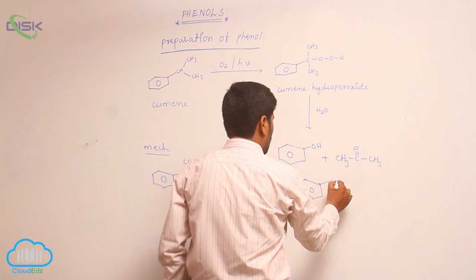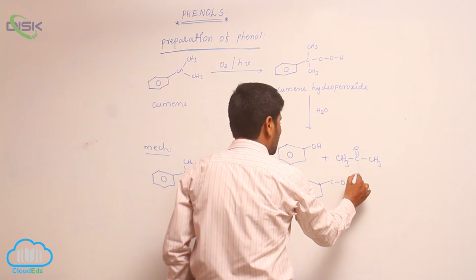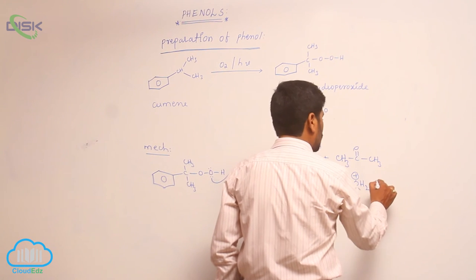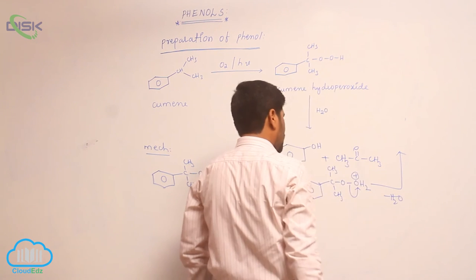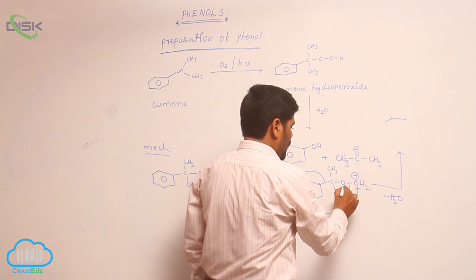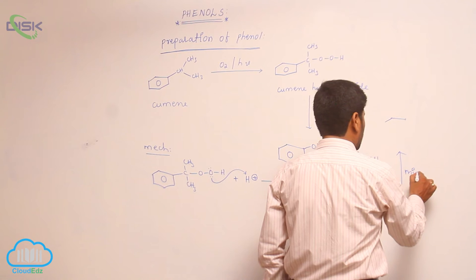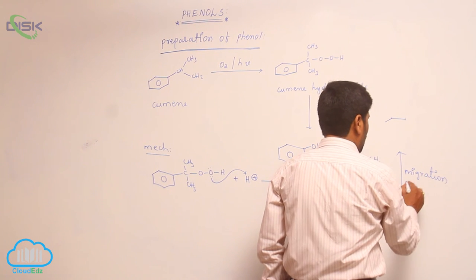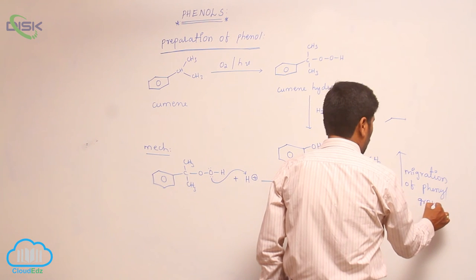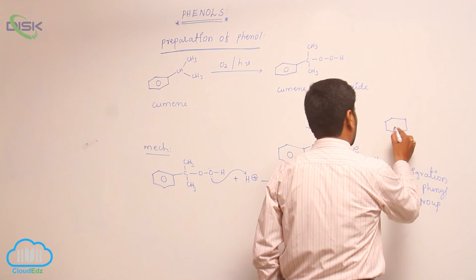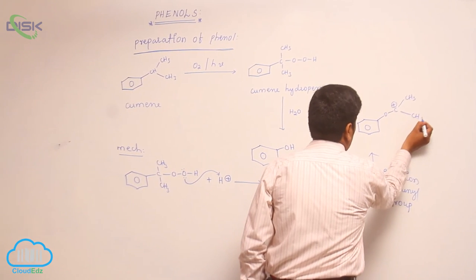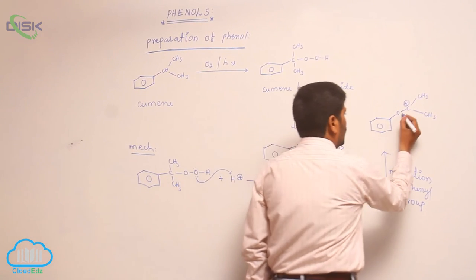Here is oxygen, and H₂ carries a positive charge, with methyl groups on either side. Loss of water molecule takes place, and immediately the phenyl group re-arranges — migration of phenyl group occurs. Then oxygen carries a positive charge, with CH₃ groups, forming a carbocation that is stabilized by the lone pair of electrons of oxygen.